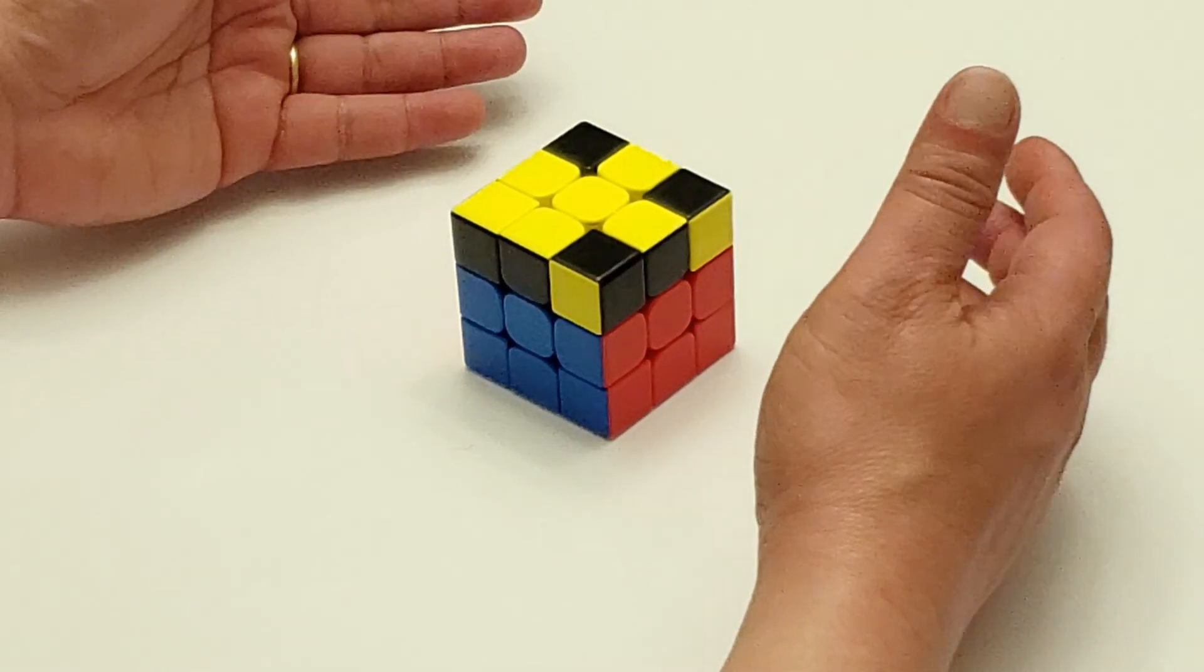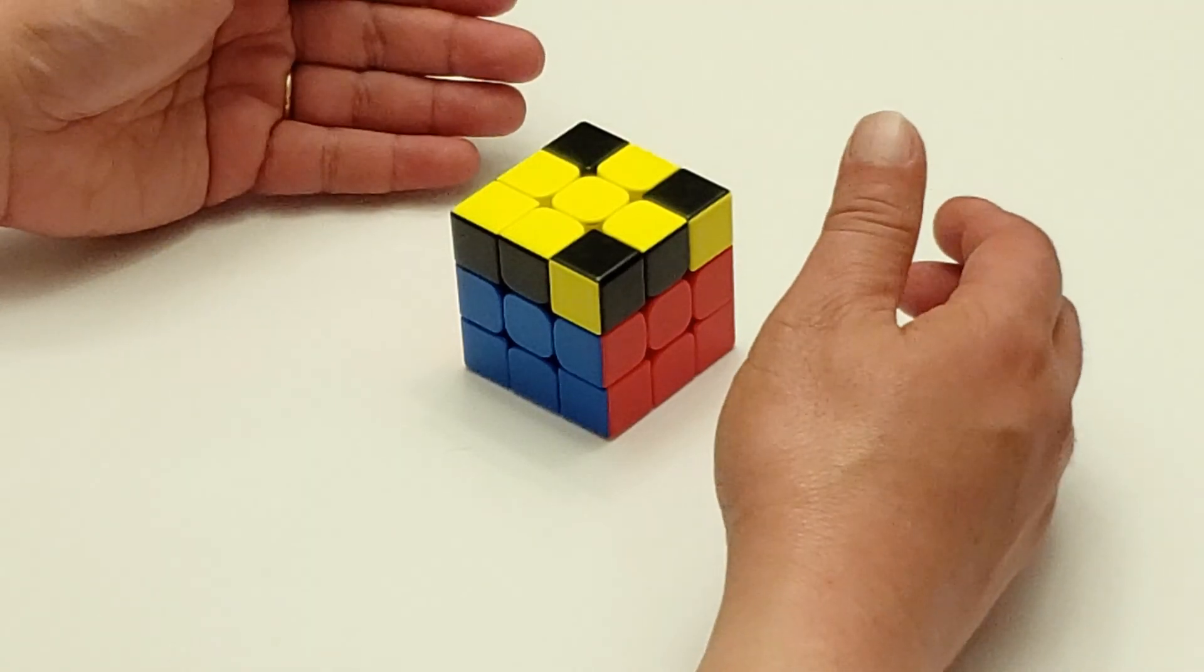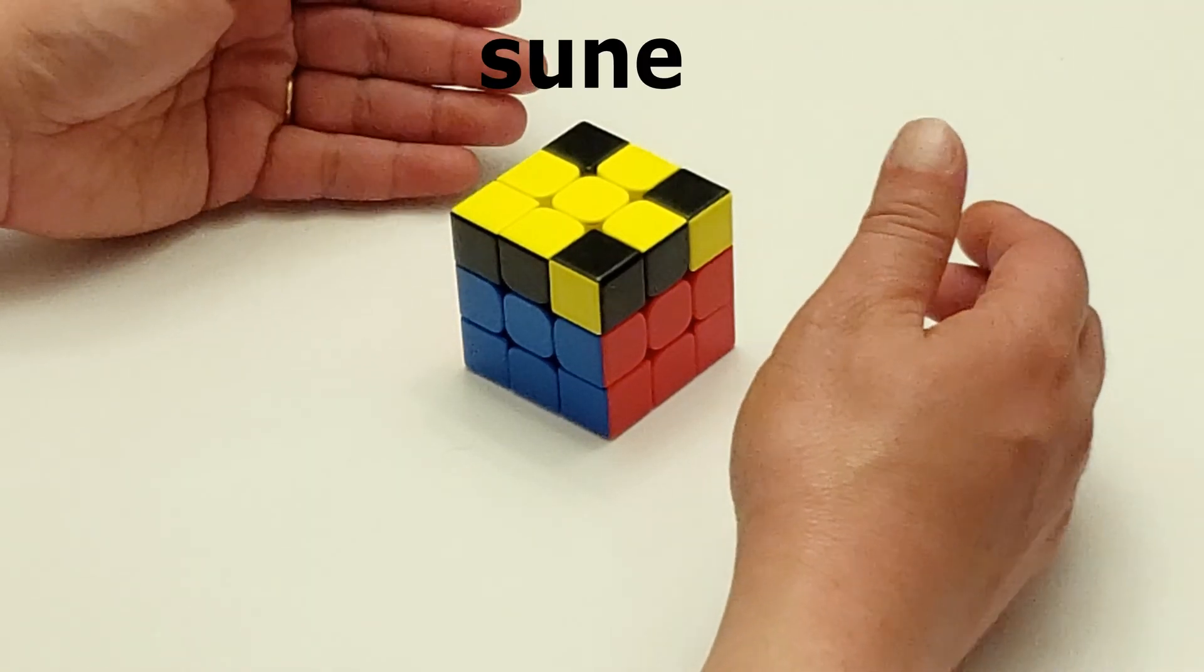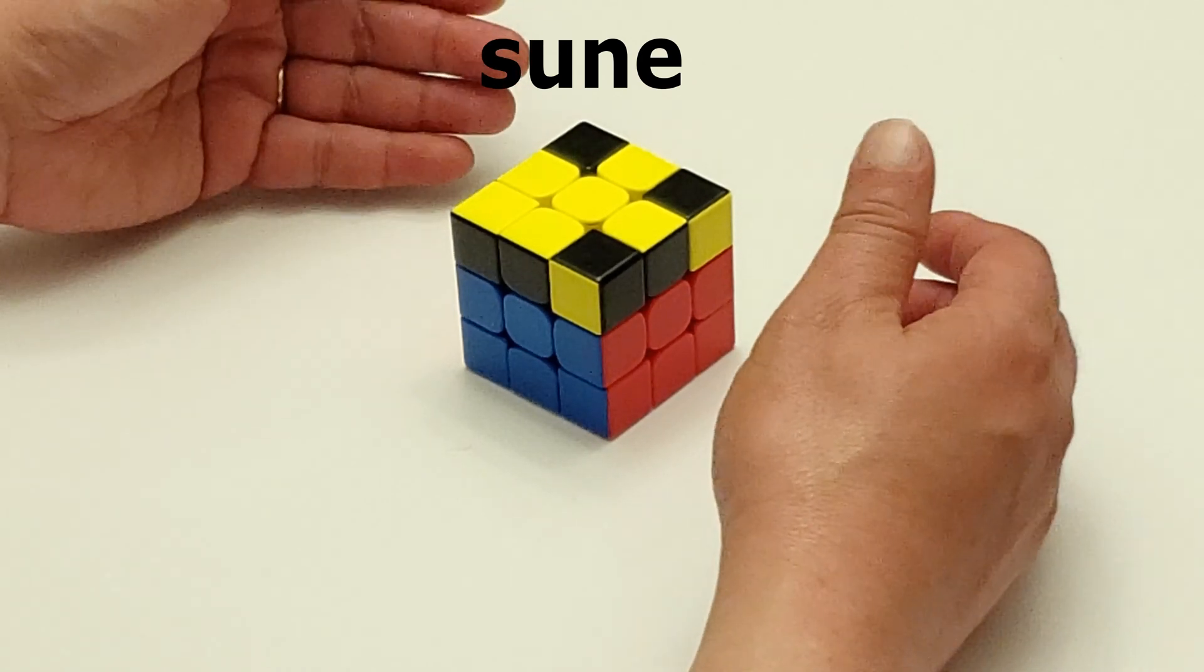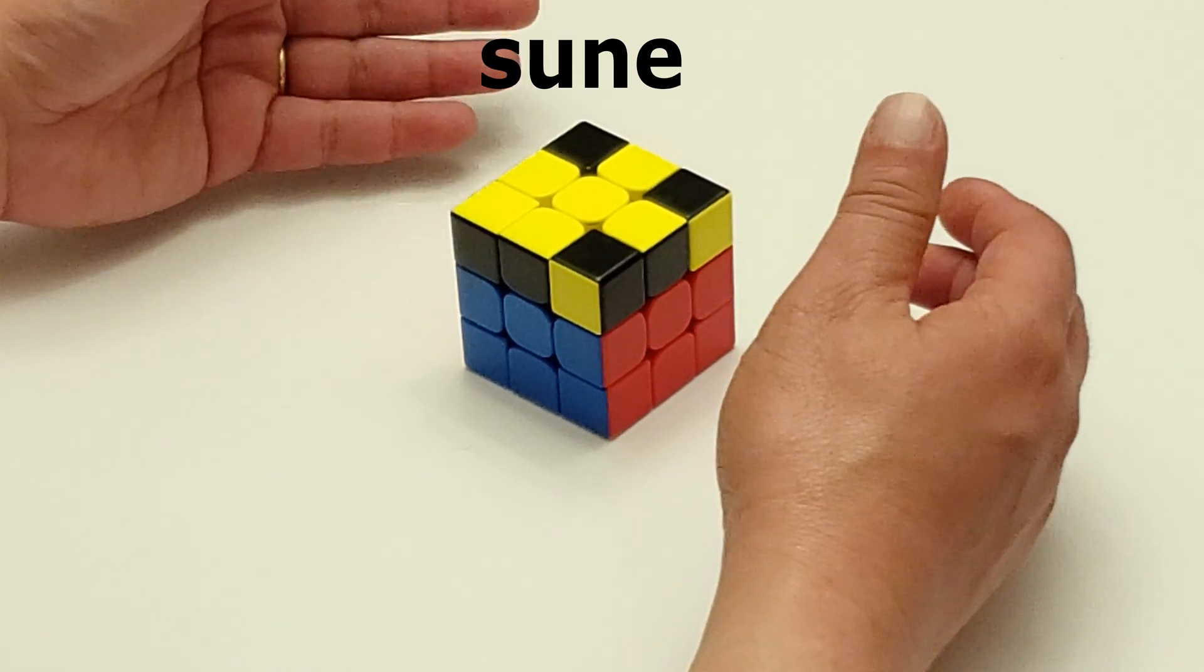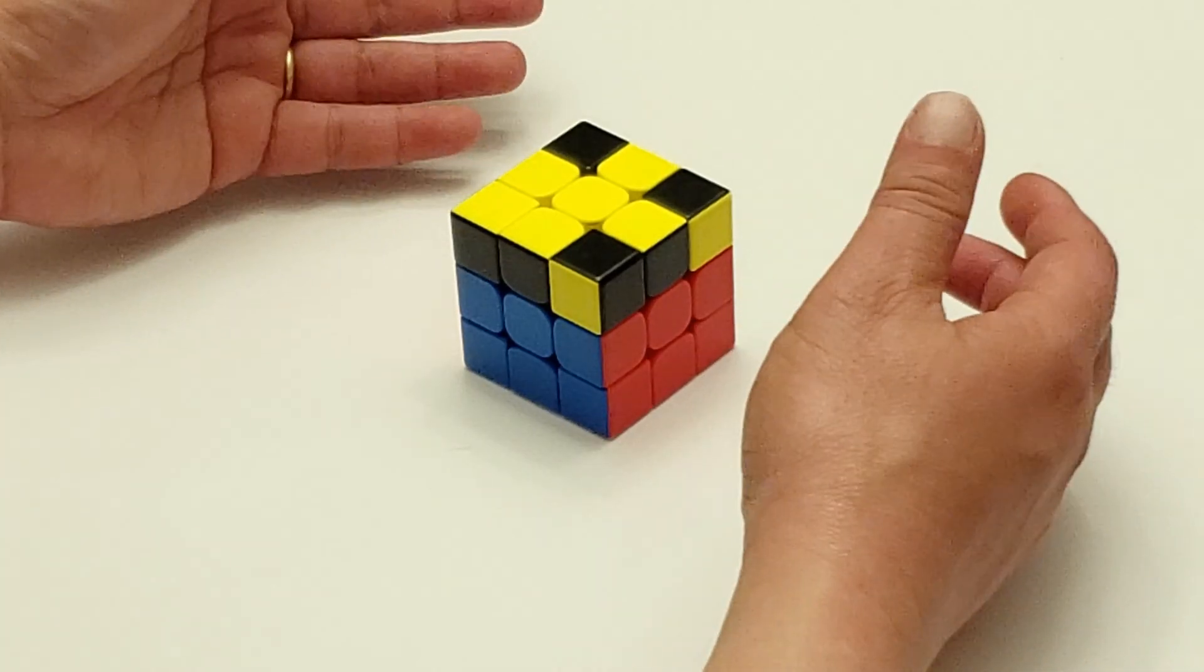So let's get started. SUNE is spelled S-U-N-E. It originally had a Swedish pronunciation, but most cubers just call it SUNE now. It looks like this.